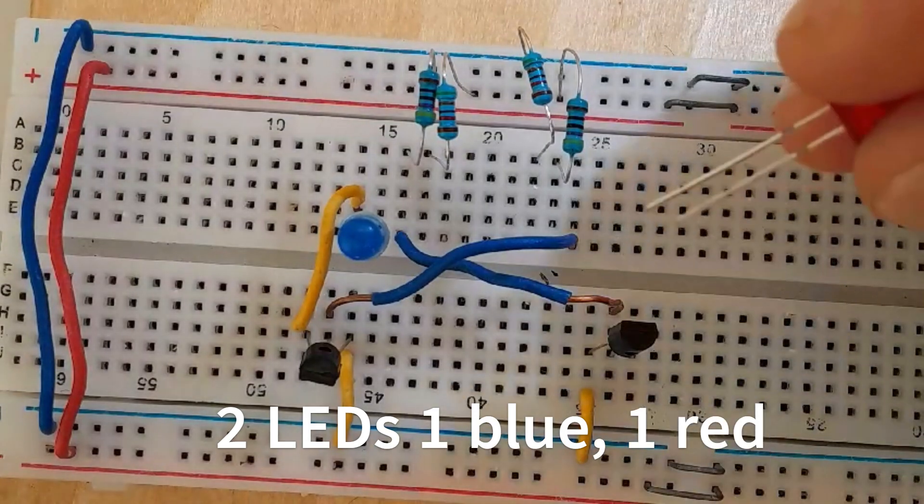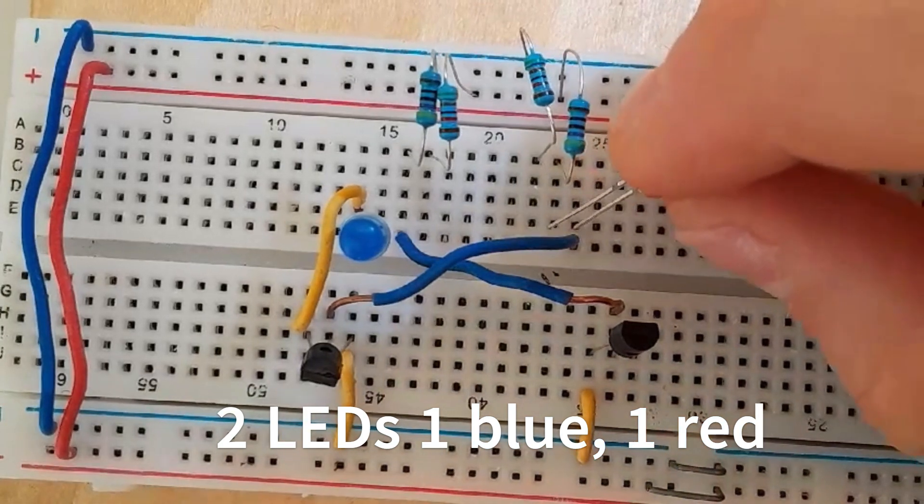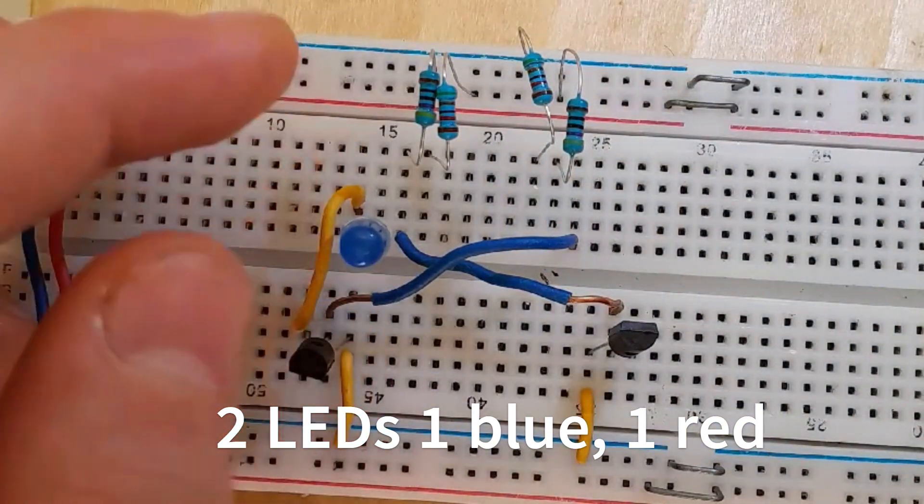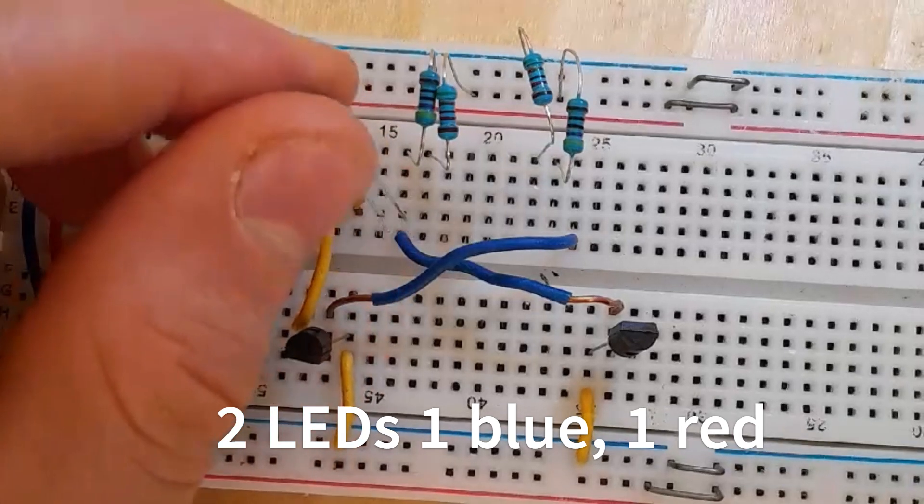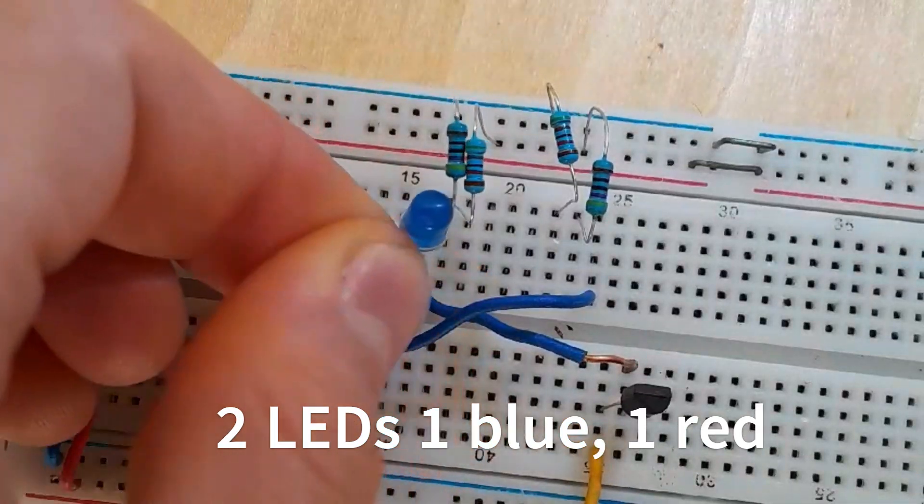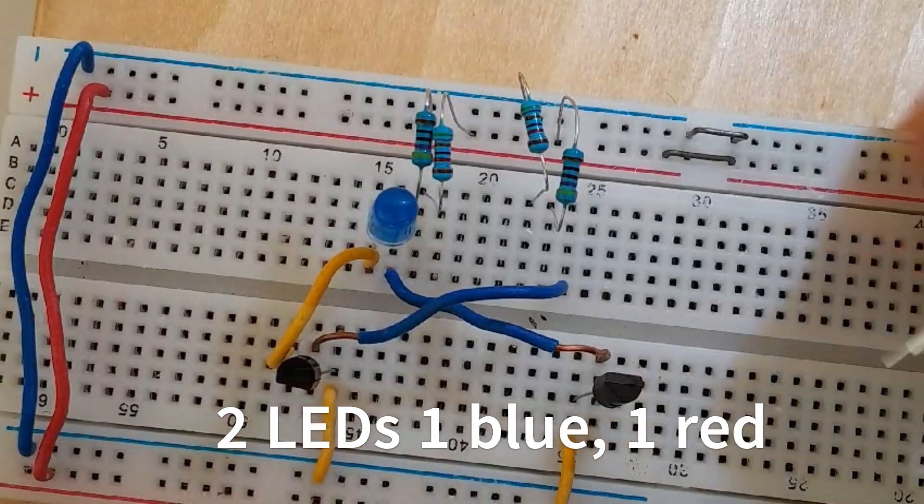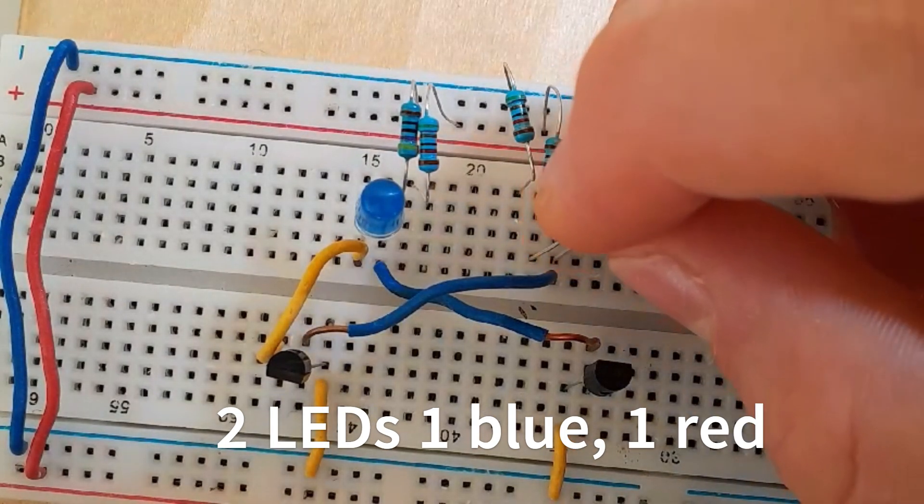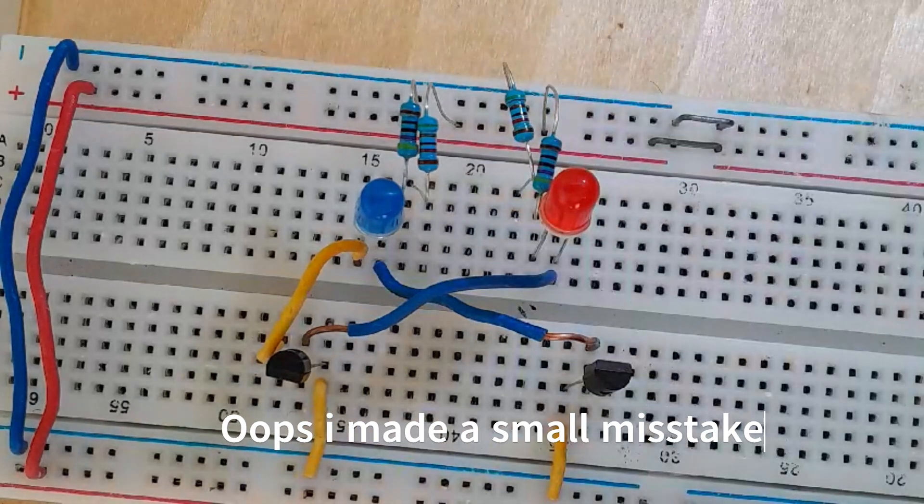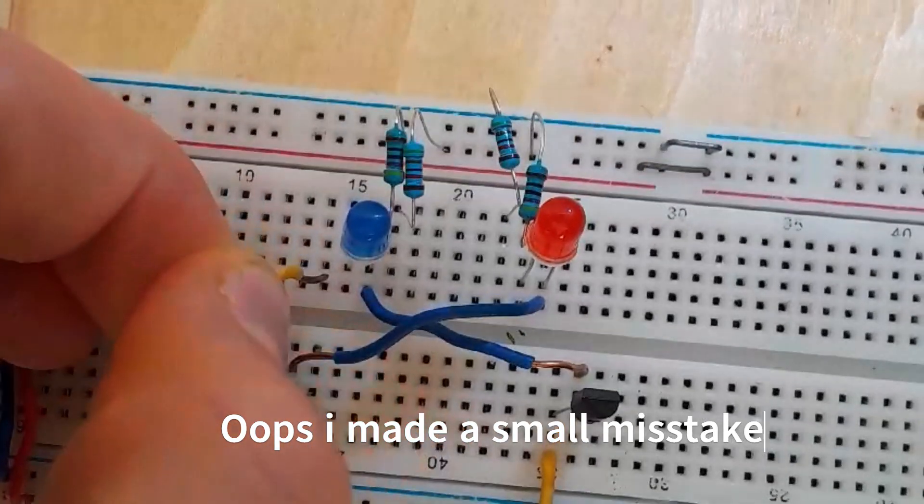Same for the other side - the negative pin to the collector pin and the positive to the 470 ohm resistor. And the second positive to the 470 ohm resistor.